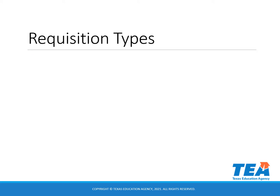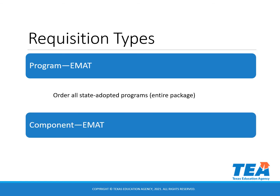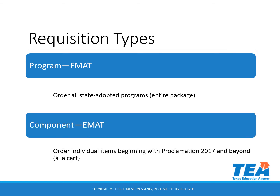There are two requisition types. The first type is the Program Requisition, which is used to order any state adopted program or the entire package. The second type is the Component Requisition, which is used to order individual items from a package. Component Requisitions are available for any state adopted materials beginning with Proclamation 2017 and each Proclamation issued after that.